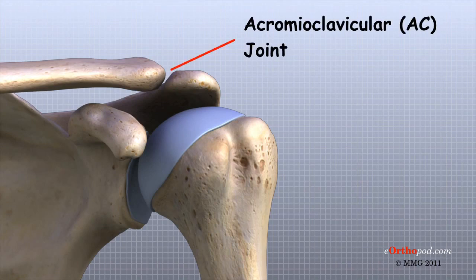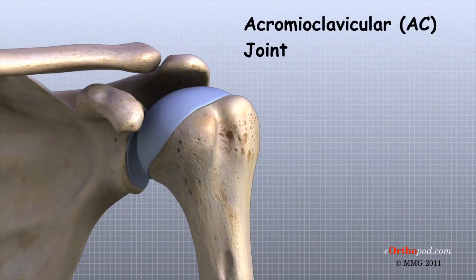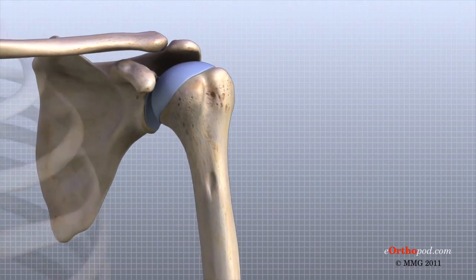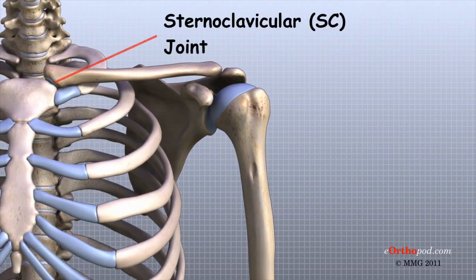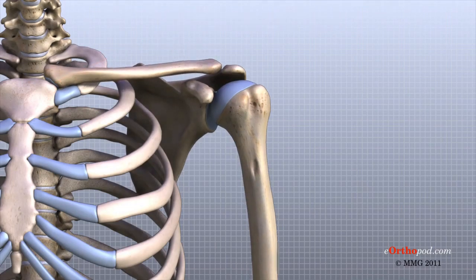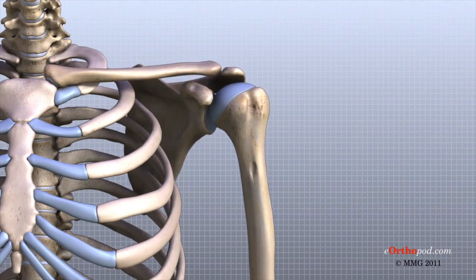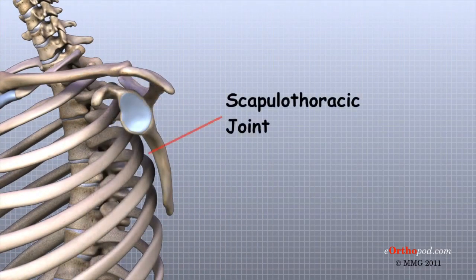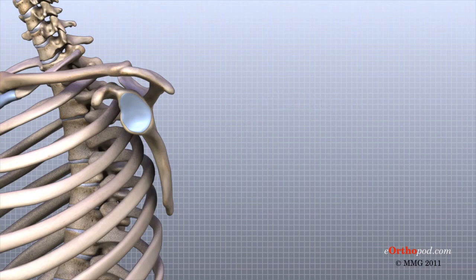The acromioclavicular, or AC joint, is where the clavicle meets the acromion. The sternoclavicular, or SC joint, supports the connection of the arms and shoulders to the main skeleton on the front of the chest. A false joint is formed where the shoulder blade glides against the rib cage. This joint, called the scapulothoracic joint, is important because it requires that the muscles surrounding the shoulder blade work together to keep the socket properly aligned during shoulder movement.